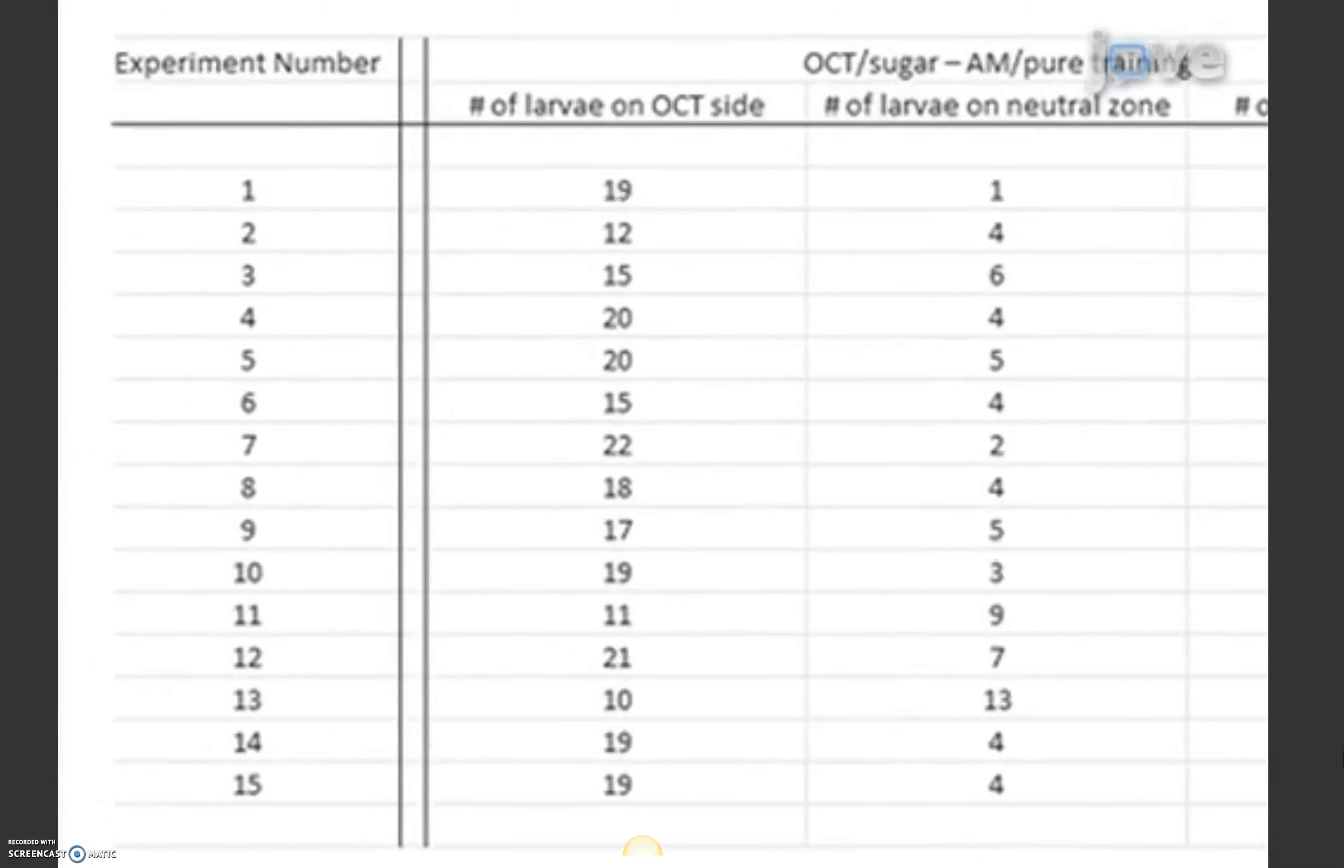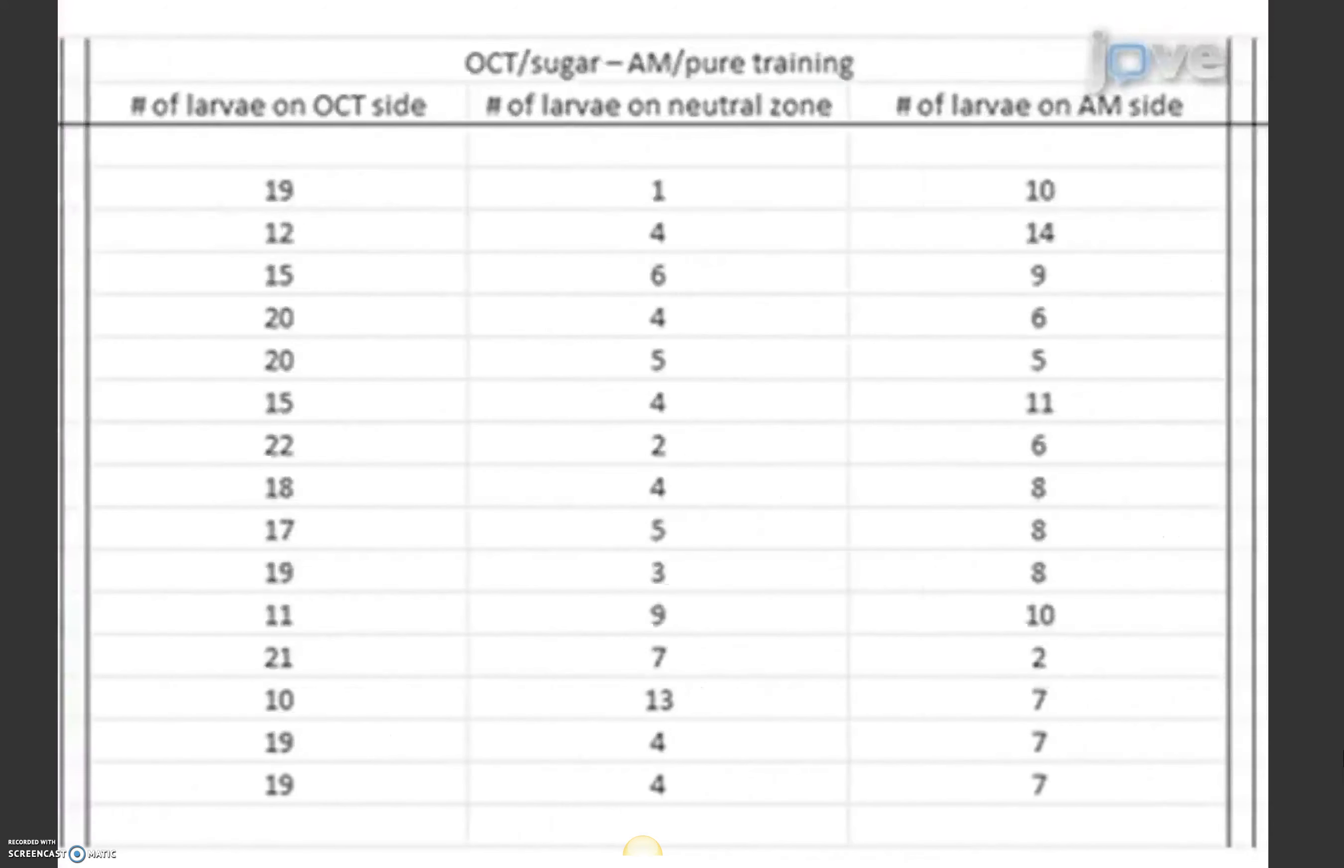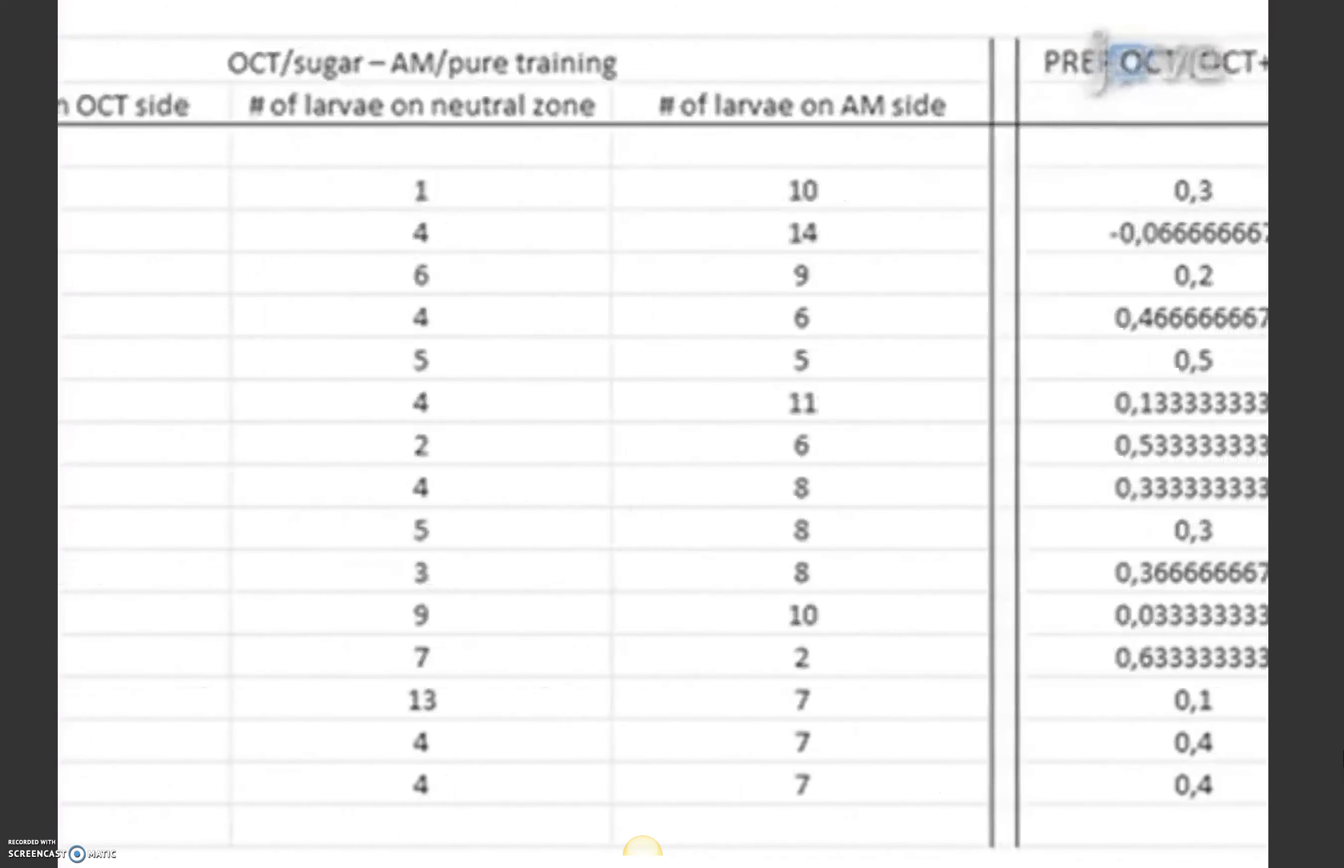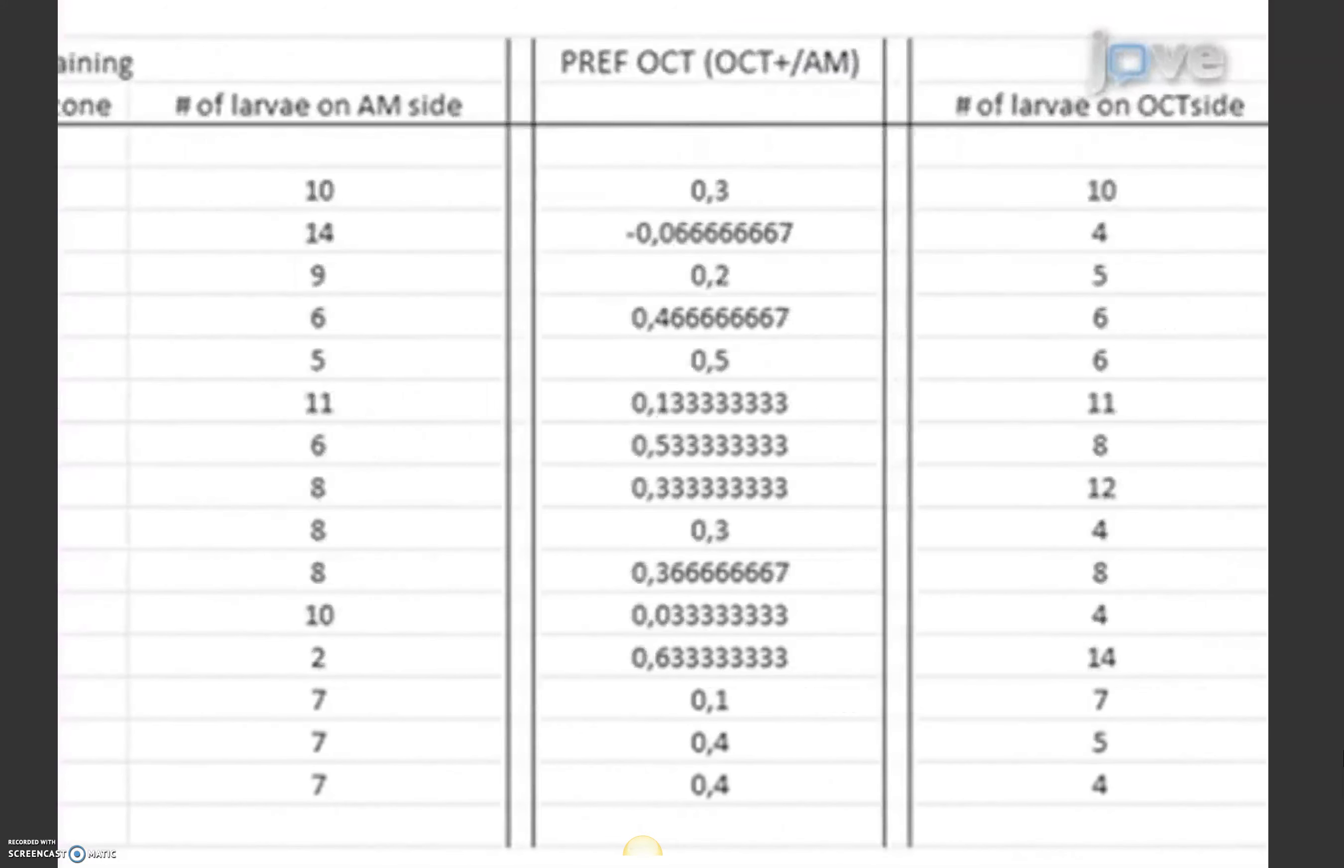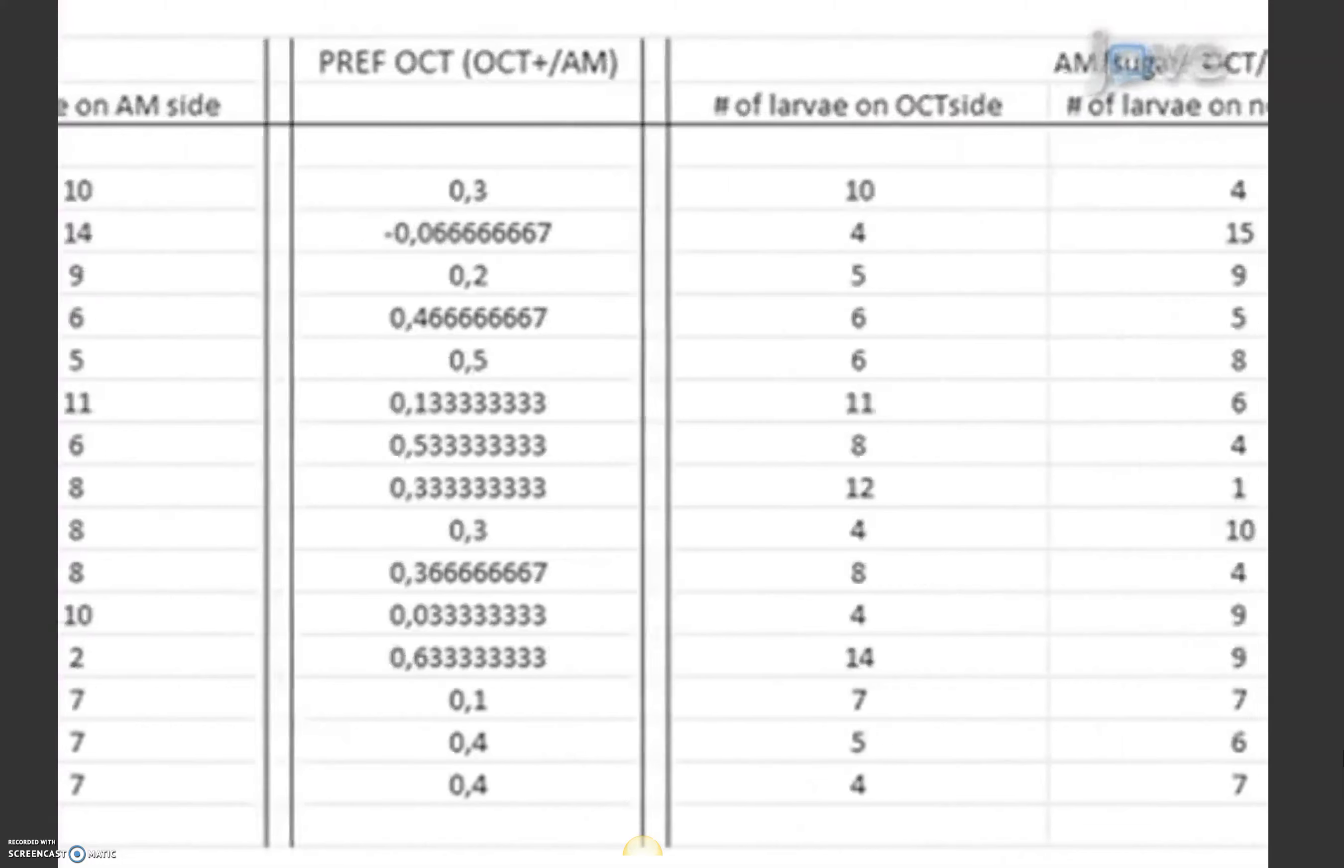The described procedure was used to train and test transgenic larvae. Using the example stimuli, data was tallied as the number of larvae in different regions of the petri dishes after 5 minutes.